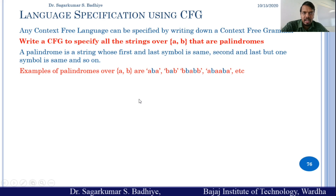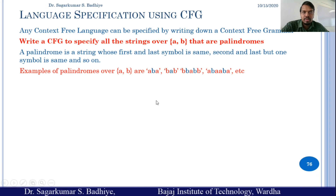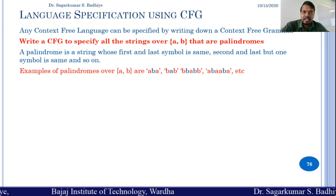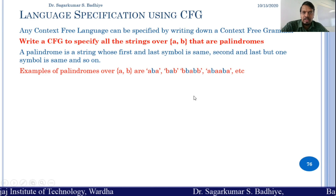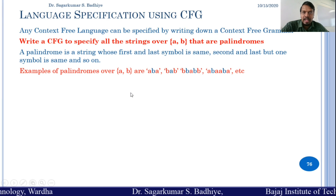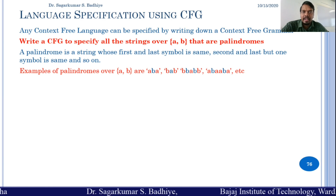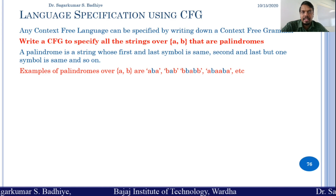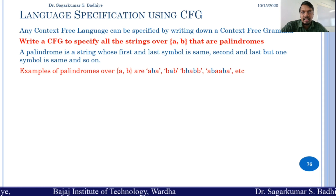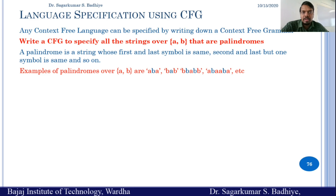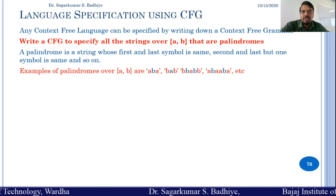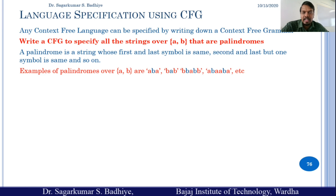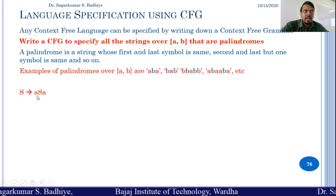To design such a grammar, we need to write rules such that whenever a particular symbol is added at the start, it must be reflected at the end of the string also. So we can write a production that would add A at the start and A at the end. Similarly, we would add a production for B such that it would add B at the start and B at the end. The first production rule would be: S derives to A S A.